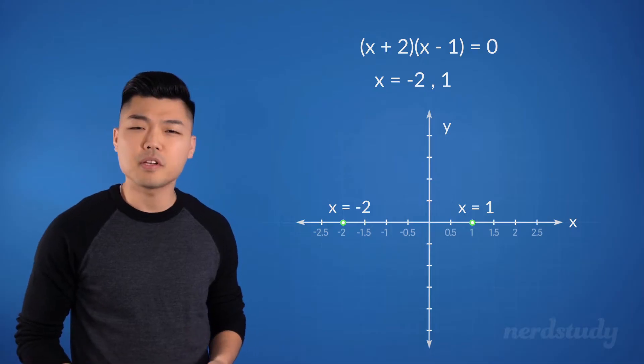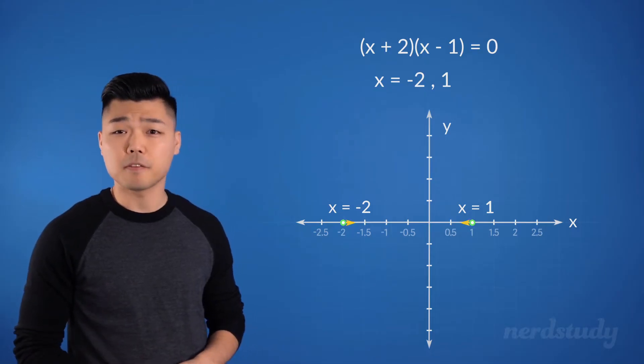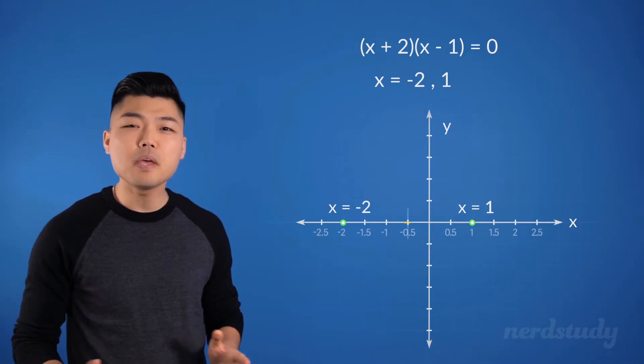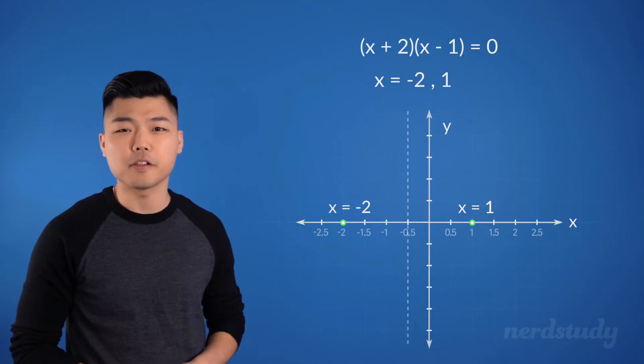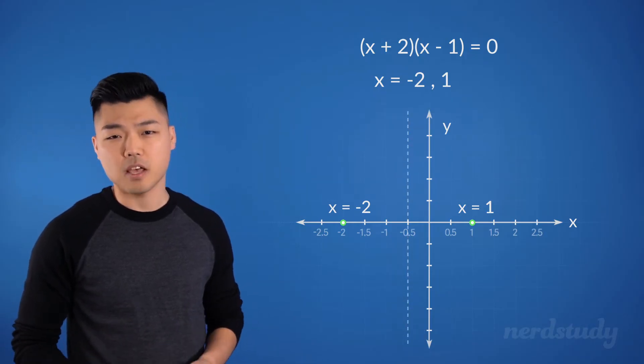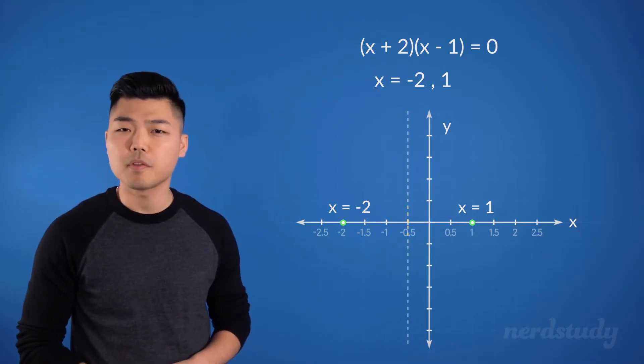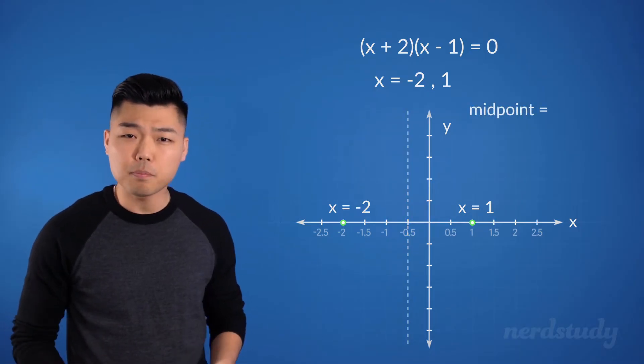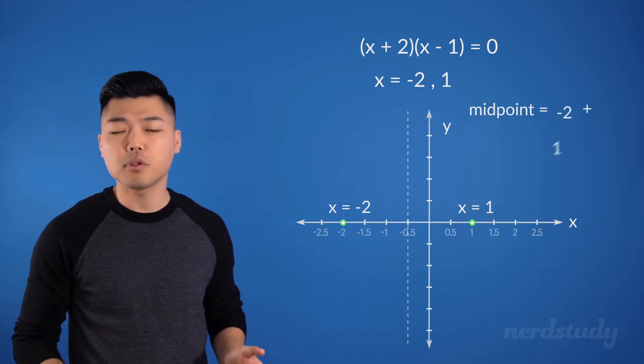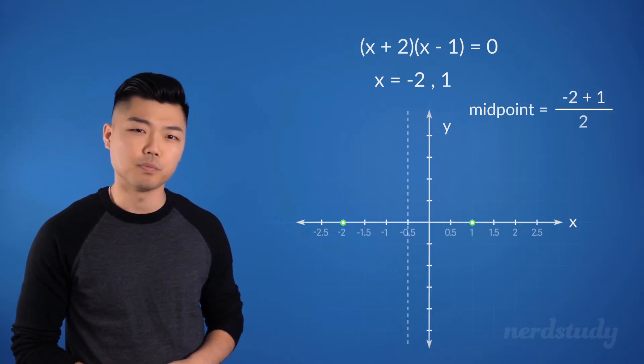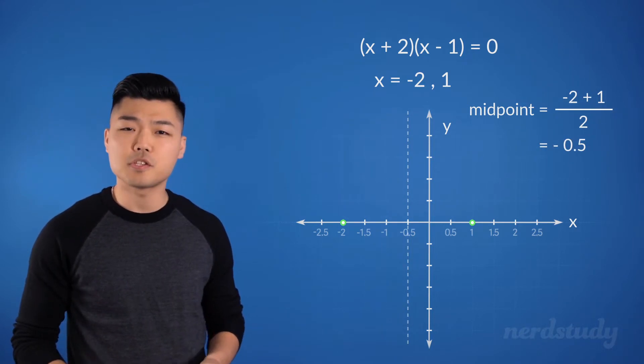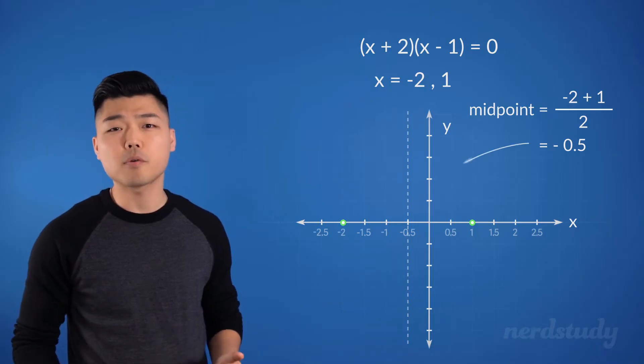Since a parabola is symmetrical, meaning that the vertex must be in the midway of these two x values, we know that the vertex is going to be somewhere on this line on the graph. So, to find the midpoint, we do negative 2 plus 1 divided by 2 to get negative 0.5, which is how we arrive upon the axis of symmetry.